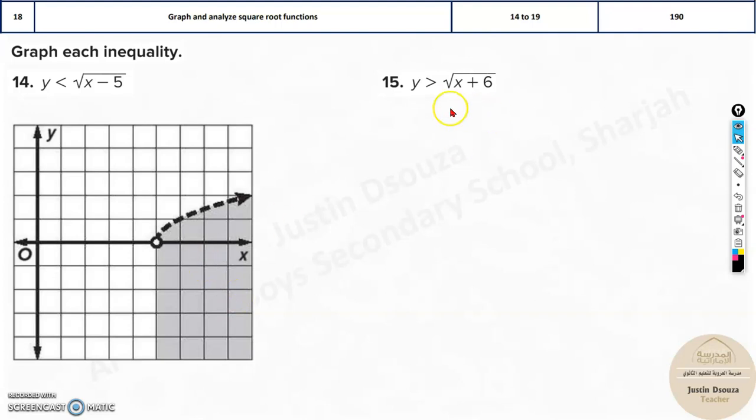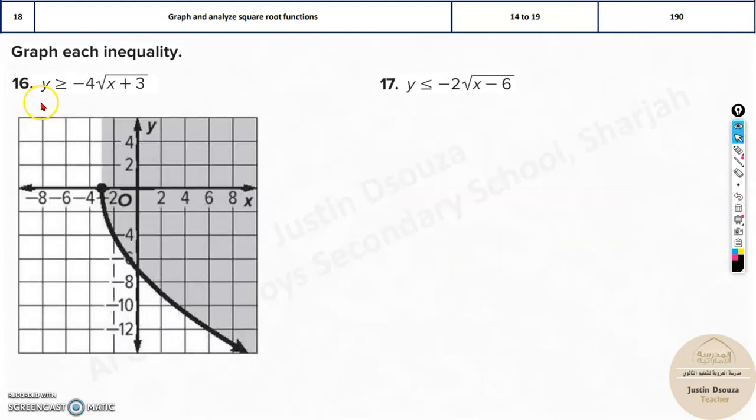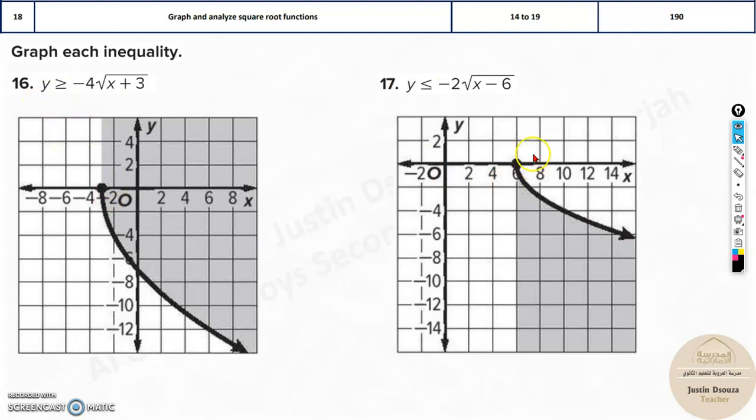Now, first of all, you need to understand what is this dotted line and what is basically a straight line. Whenever you have the inequality like this, less than, greater than, you will have a dotted line like this, dotted lines. Whenever it's less than or equal to, greater than or equal to, it will be a straight line, solid line. That's what we call it. Now I'll just show you over here. See, we have greater than or equal to, it's all solid.